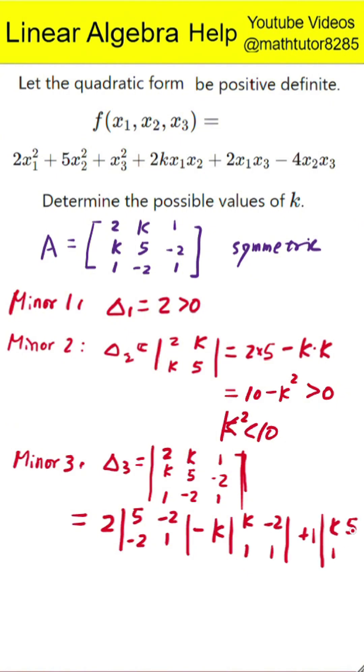This gives 2 times the quantity 5 times 1 minus negative 2 times negative 2, minus k times the quantity k times 1 minus negative 2 times 1, plus 1 times the quantity k times negative 2 minus 5 times 1.